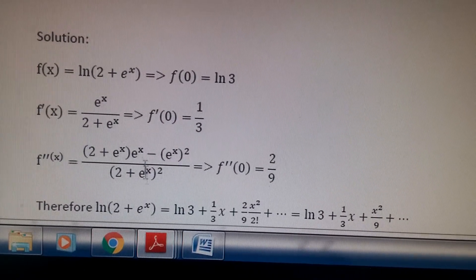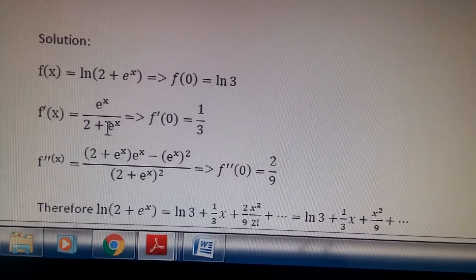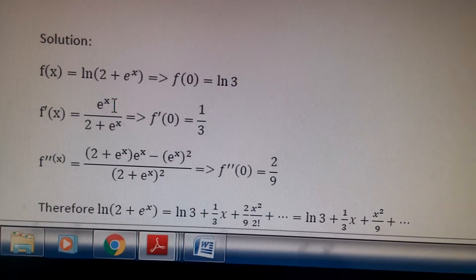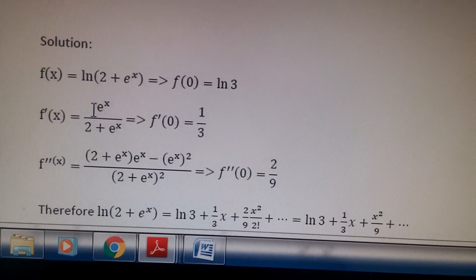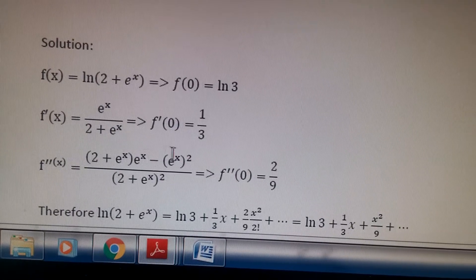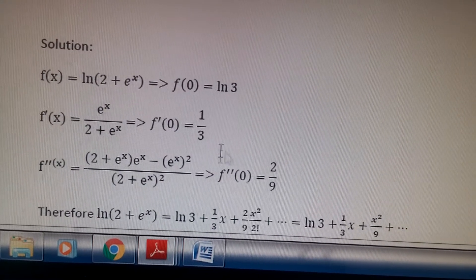And then take the derivative of this using the quotient rule. So just square the denominator, leave this at the top, take the derivative of the numerator here, subtract this, multiply the numerator by the derivative of the denominator and you get this. You plug in 0 and you should get this.